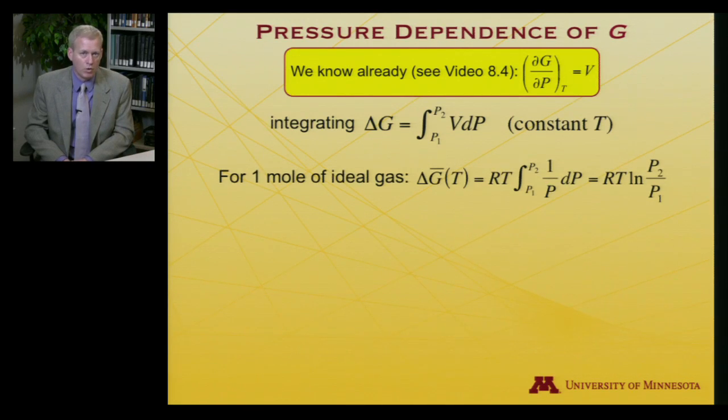So if I do this for a mole of an ideal gas, then I'm going to get ΔḠ, now to indicate a molar quantity. At a given temperature T, which I should specify, it's going to be equal to RT, where T is the temperature I'm working at, integral from P₁ to P₂ dP over P. And so that's a trivial integral to do. It is RT log P₂ over P₁.